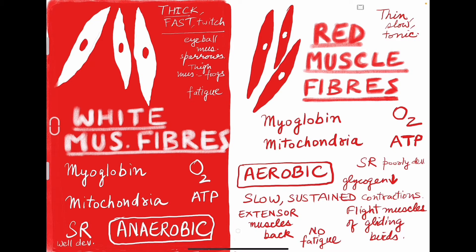There are two types of muscle fibers in vertebrates: the white muscle fibers and the red muscle fibers. White muscle fibers are also called thick muscle fibers, fast muscle fibers, or twitch muscle fibers. Whereas the red muscle fibers are known as thin muscle fibers, slow muscle fibers, or tonic muscle fibers.